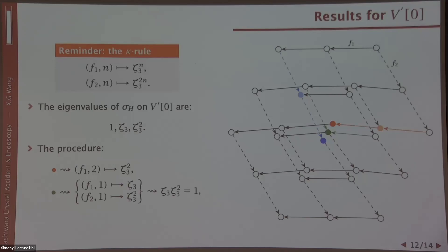For the green dot, you have two arrows pointing to it: there is (F1, 1) of length 1 and F2 with length 1. You get two numbers, and then what we do is we take the product, simply take the product, and we obtain 1 in the end. The blue one, we get (F2, 2) according to the diagram, and we got zeta 3 to the fourth power, which is the same as zeta 3. You can see that the three numbers below match the three eigenvalues.